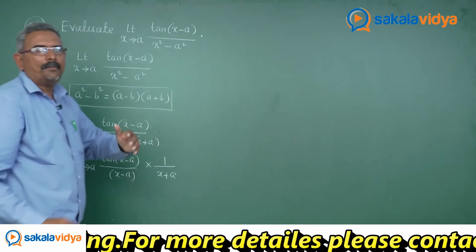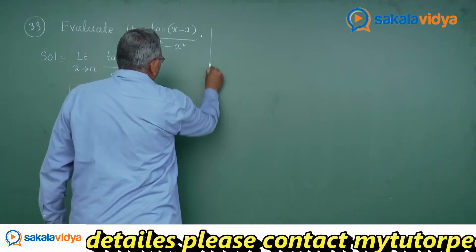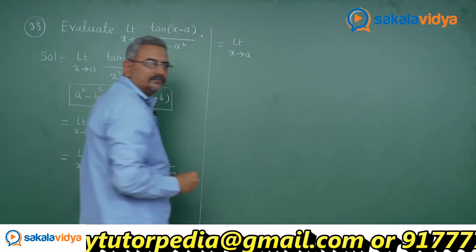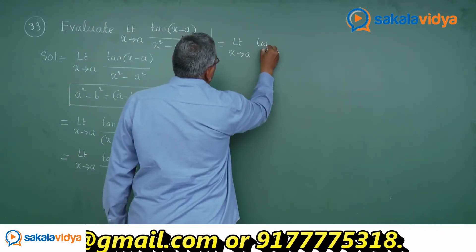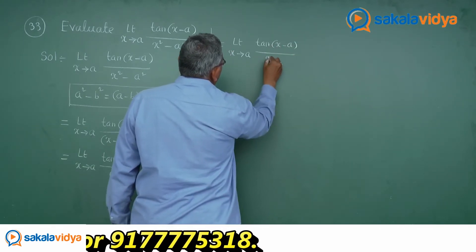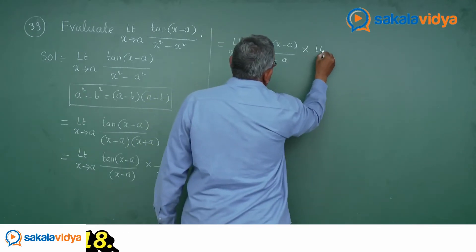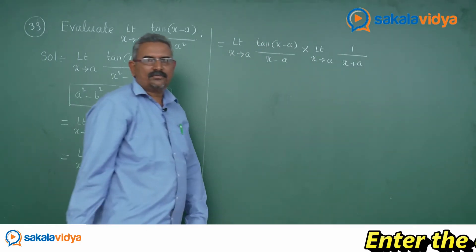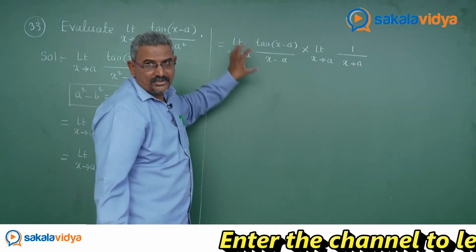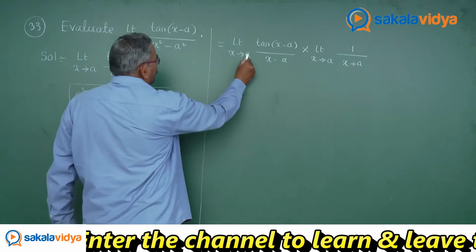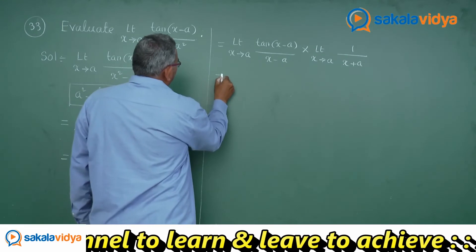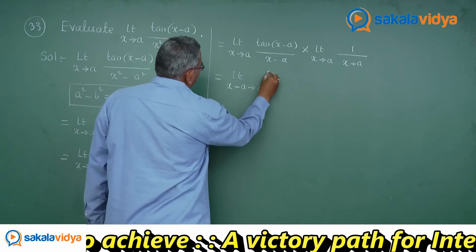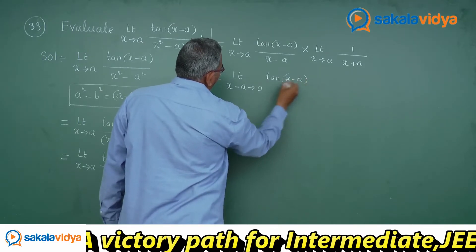Now the limit is being applied to both functions. So: limit x tends to a, tan(x minus a)/(x minus a), multiplied by 1/(x plus a). This is a rational function. Now in this case we need to change the limit. As x approaches a, x minus a approaches 0. So this can be rewritten as: limit (x minus a) tends to 0, tan(x minus a) divided by (x minus a).